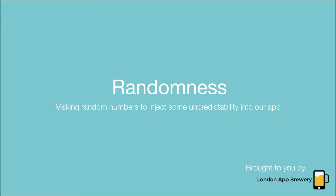Hello guys and girls, this is Angela from the London App Brewery, back with another episode on how to make apps with no programming experience. If you recall in the last episode, we made an array that contained the image names of the six dice faces. In today's episode we are going to introduce randomness — or rather pseudo-randomness.